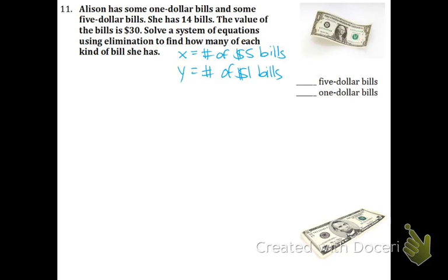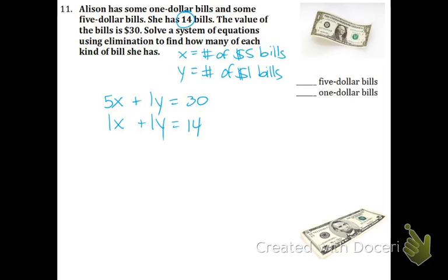Now let's make our equations. The first one deals with the value of the bill. A $5 bill is worth $5, so we attach the x. A $1 bill is worth $1, so we attach the y. And she has $30 total. Our first equation is all about the value of money. The next equation is x plus y equals 14, because that's the number of bills she has total. Using elimination: subtract the second equation. 5x minus 1x is 4x. 1y cancels out with itself. We get 16 on the other side. Divide by 4 and x equals 4. So Allison has 4 five-dollar bills.